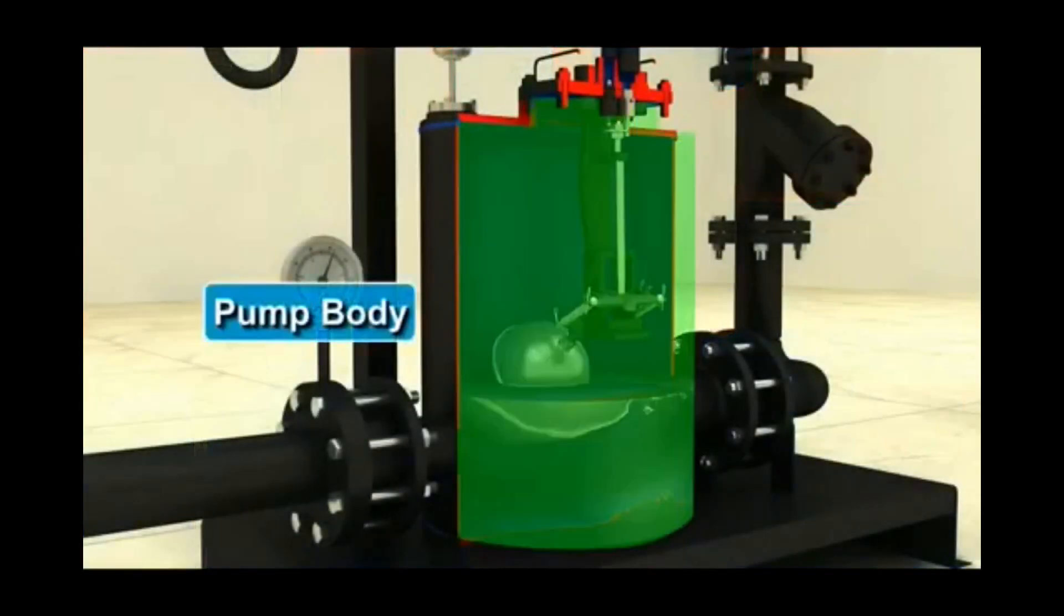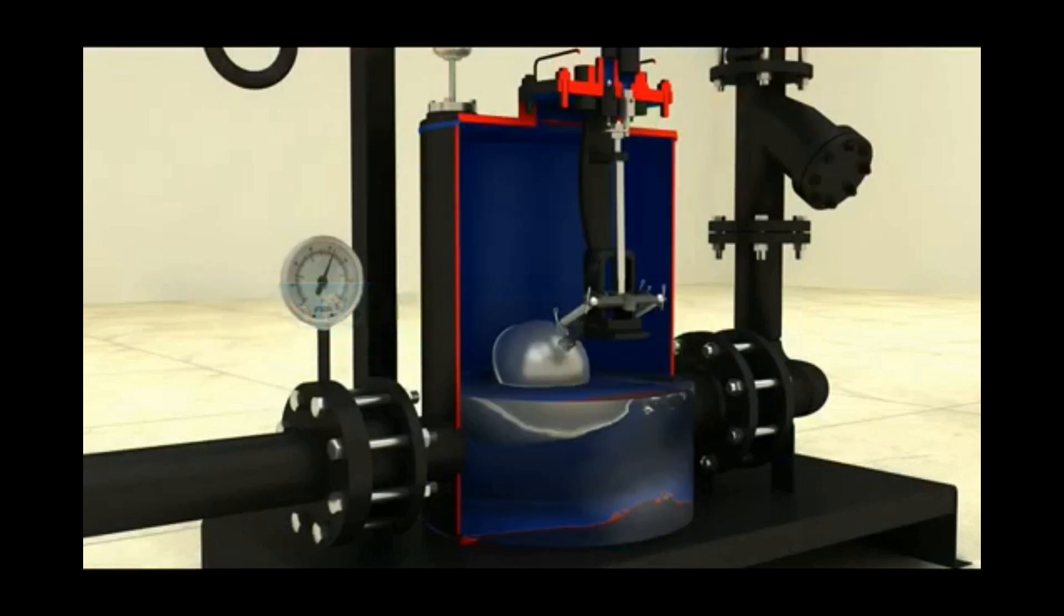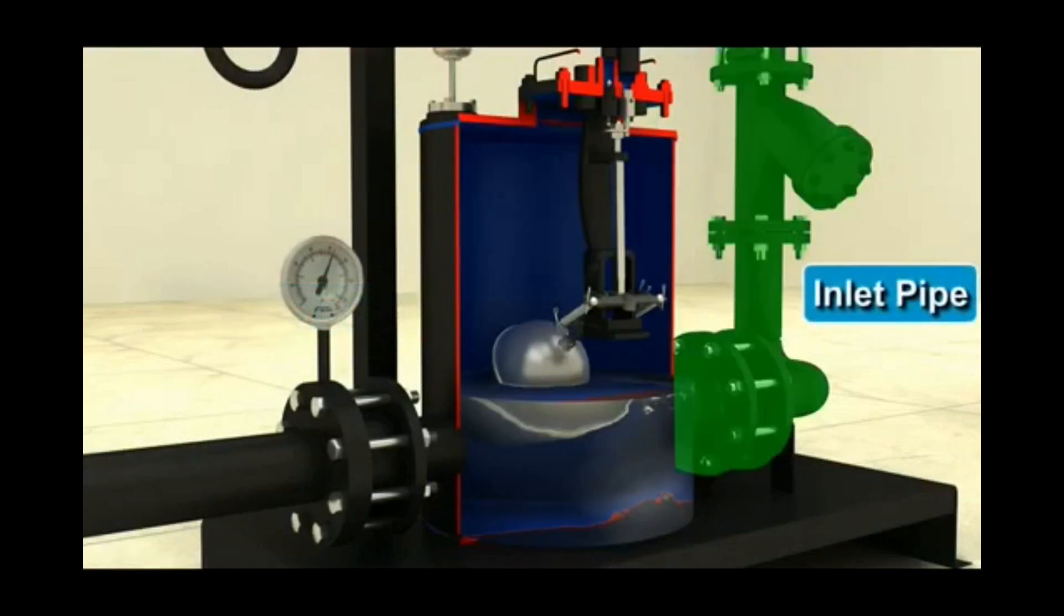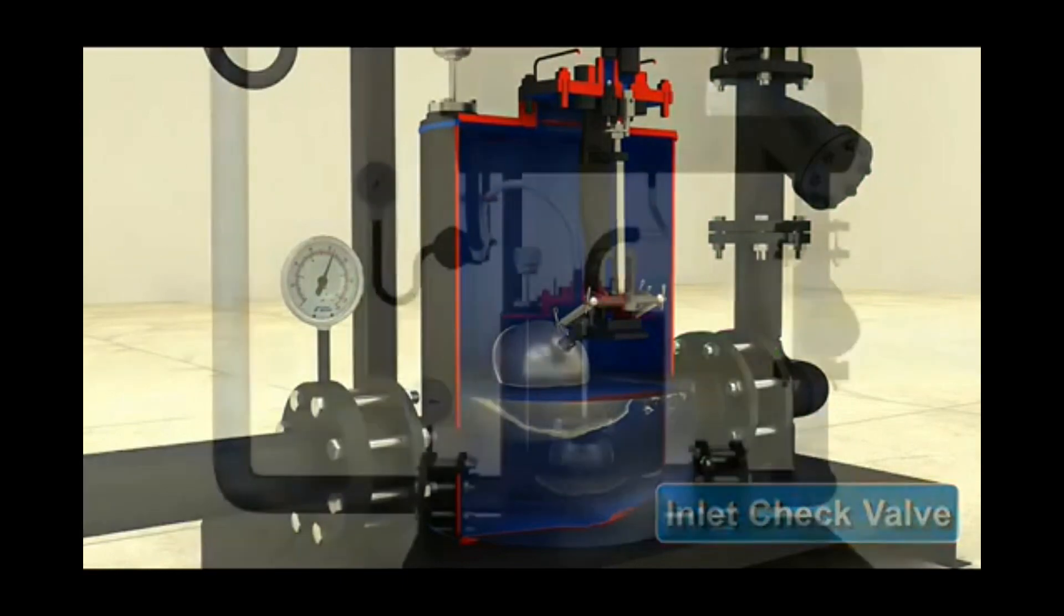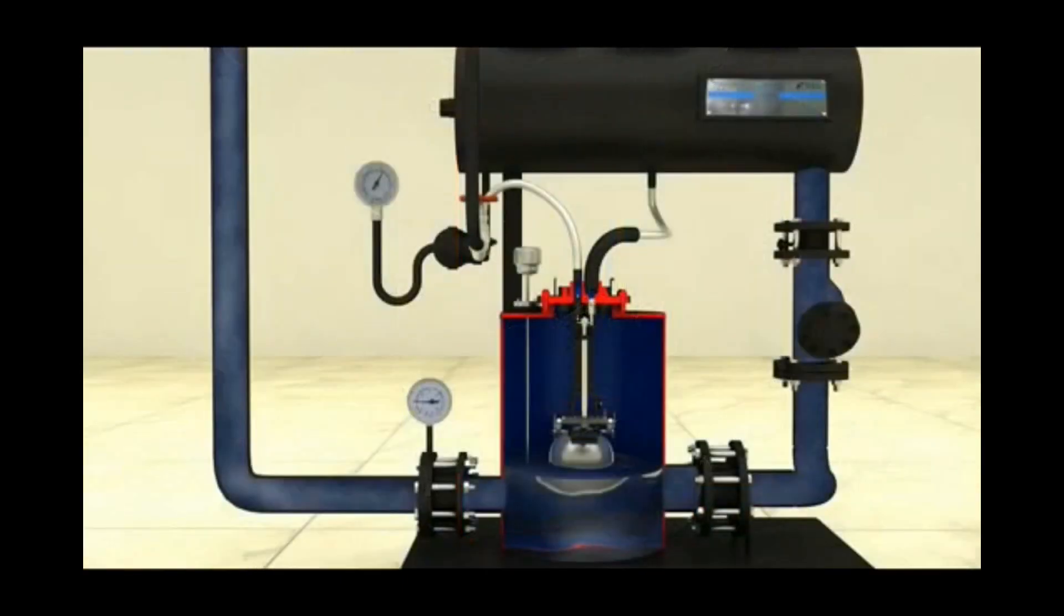When the pressure in the pump body has fallen to the same level as the pressure in the inlet pipe, the inlet check valve opens. Condensate will again flow through the check valve to fill the body and begin next cycle.